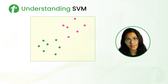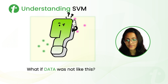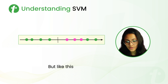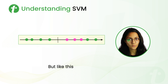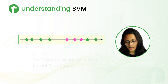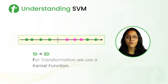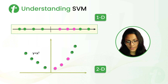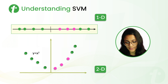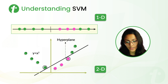Now we had a linearly separable dataset, so we used the hyperplane to segregate them. But what if the data was not like that — instead, one category falls under another? In that case, we can't use the hyperplane to separate the two categories. For this kind of dataset, we transform our 1D plot to a 2D plot. The function we use for this transformation is called the kernel function. After transforming the 1D plot using the kernel function into a 2D plot, we can now use the hyperplane to separate the two categories.